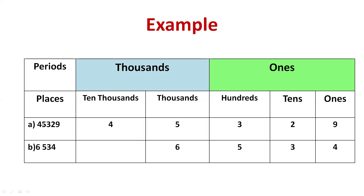For that, we will not start writing from four. What we'll do is go to the right side of this number, which is nine. We'll write nine under the ones place, two under the tens place, three under the hundreds place, five under the thousands place, and four under the ten thousands place. We will always start writing a number from the right side.